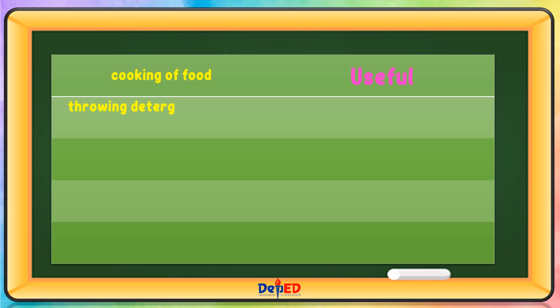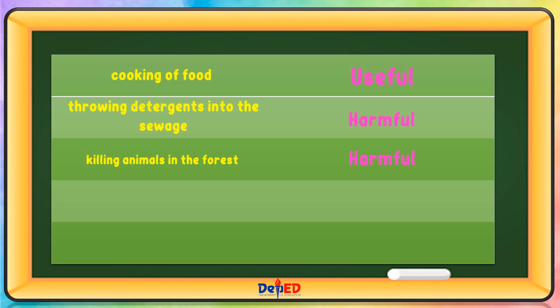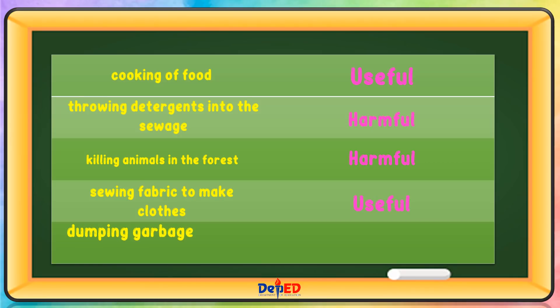Throwing detergent into the sewage — harmful. Killing animals in the forest — harmful. Sewing fabric to make clothes — useful. Dumping garbage into the river — harmful.